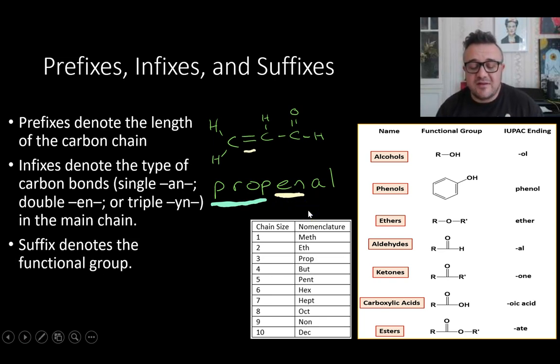And then our suffix denotes the functional group. And here we have a C on the end with an oxygen coming off it. And if we look down here, aldehydes. Okay. A carbon on the end with an oxygen coming off, double bonded with also a hydrogen is an aldehyde. And they have the suffix al.